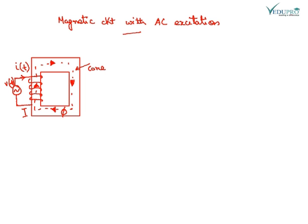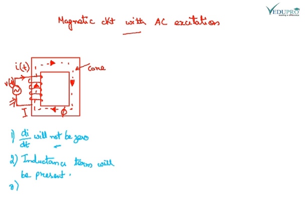The figure shows a magnetic circuit with AC excitation. A few points should be noted in this circuit: di by dt will never be zero because there will always be change in current due to AC supply, inductance will be present here, and the flux will be alternating.